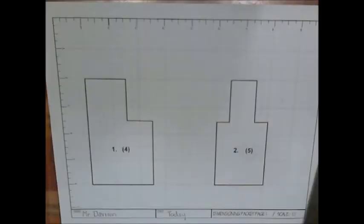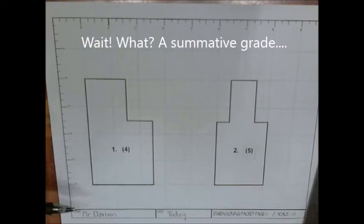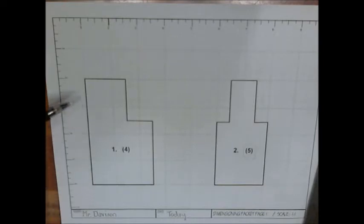Okay class, we have dimensioning packet page one and on the flip side dimensioning packet page two, a total of four drawings that are going to be a summative grade. All four of these items need to be dimensioned correctly and neatly. Your grade is going to be half dependent on it being correctly dimensioned and the other half being neatly dimensioned.